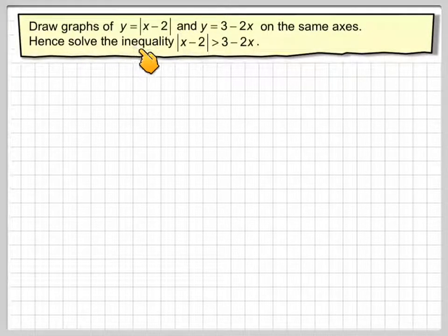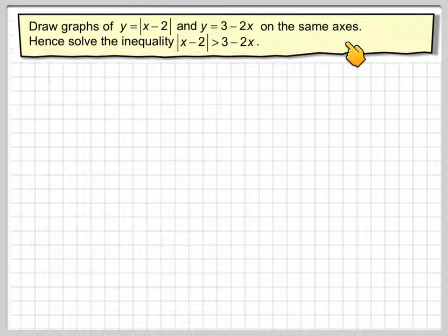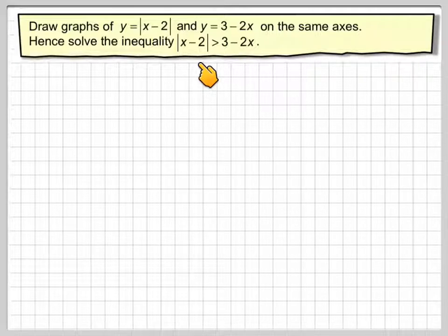Draw graphs of y equals the absolute value of x minus 2 and y equals 3 minus 2x on the same axis. Hence solve the inequality, the absolute value of x minus 2 is greater than 3 minus 2x.